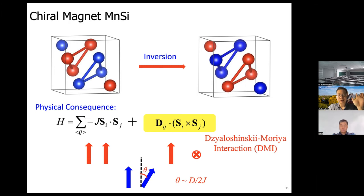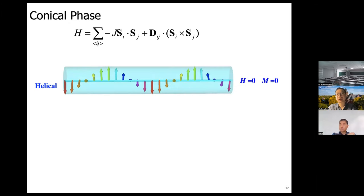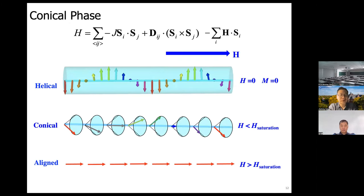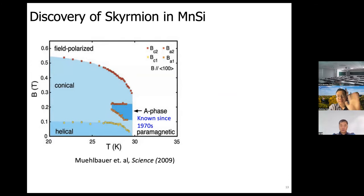The Heisenberg exchange promotes parallel spin alignment, while the DM interaction likes neighboring spins to be perpendicular. Their competition results in neighboring spins forming a small but nonzero angle, given by the ratio of the DM interaction to the Heisenberg exchange. For an array of spins this rotation angle accumulates, resulting in a helical state. Applying a large magnetic field gives a spin-polarized state; a moderate field gives a conical state in between.